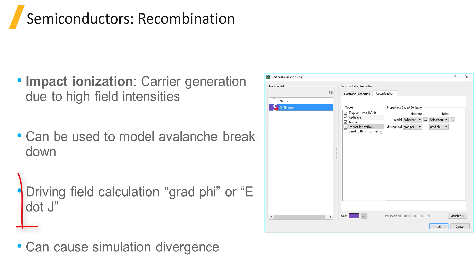The impact ionization process is exponentially dependent on the driving field, either the quasi-Fermi level gradient or electric field component in the direction of the current density, and the local variations in the quasi-Fermi levels through the current density.